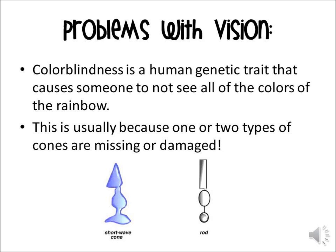One of the most common questions kids have is about color blindness. That's a human genetic trait that causes someone to not see all the colors of the rainbow, usually because one or two types of cones are missing or damaged. So instead of having red, green, and blue cones, someone with color blindness usually just has the blue short-wave cone and their rods. This makes it so they can only pick up on certain colors, and colors that are red and green look the same to them.